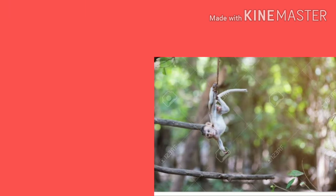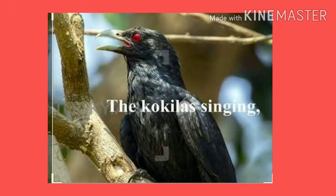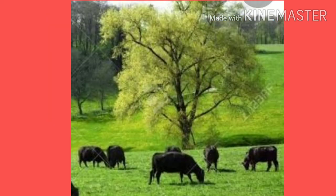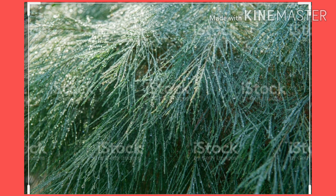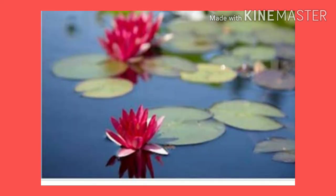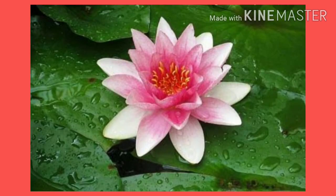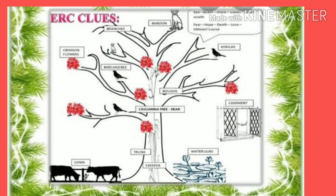The poetess explains that she can hear the beautiful singing of the Koels from the Casuarina tree, and listening to their songs, the sleepy cows start grazing under the tree. In the winter season, the Casuarina tree looks like a snow tree or a hoar tree with white frost deposits on it. Near the Casuarina tree, there is a tank or pond with water lilies decorated with snow.